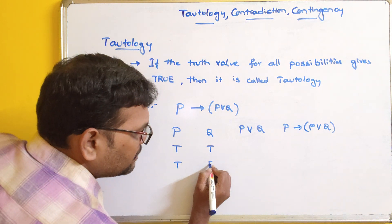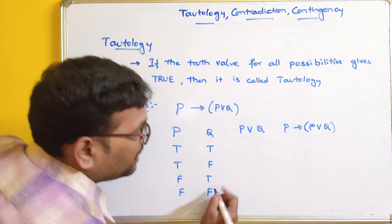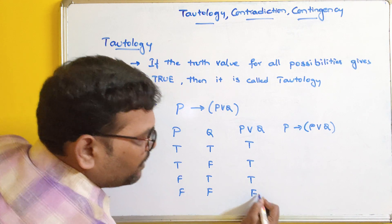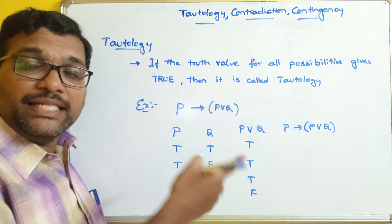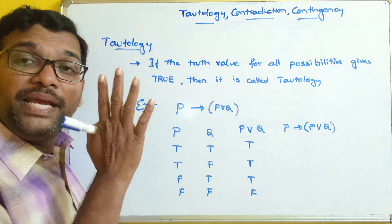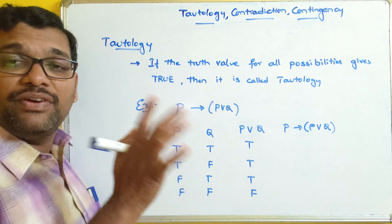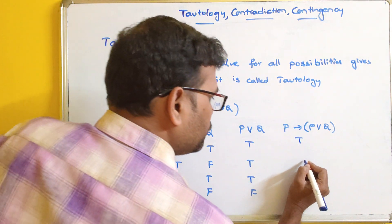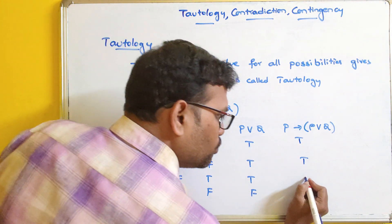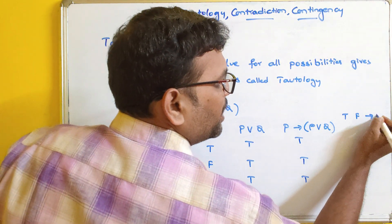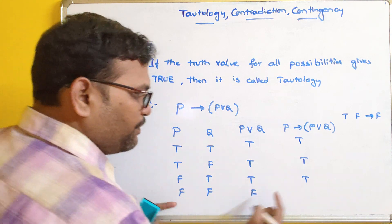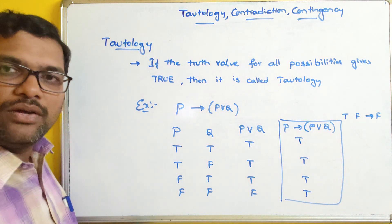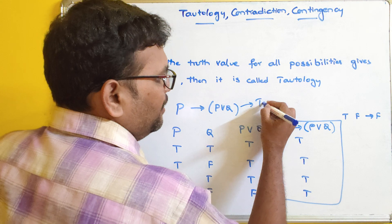The four combinations are: true/true, true/false, false/true, false/false. P ∨ Q gives: true, true, true, false. For P → (P ∨ Q), the implication is false only when P is true and Q is false. So: true→true = true, true→true = true, false→true = true, false→false = true. All possibilities give true.